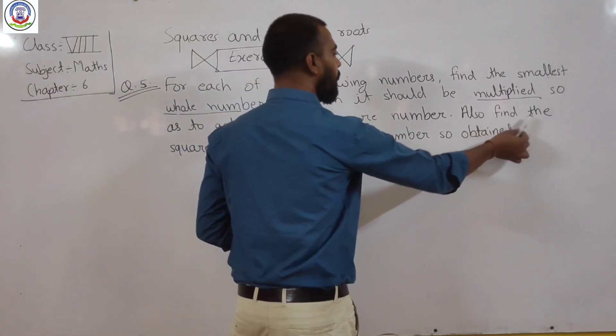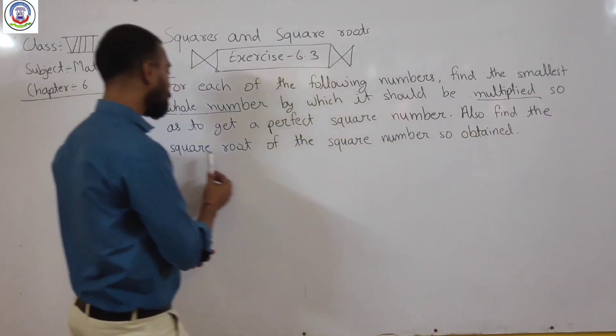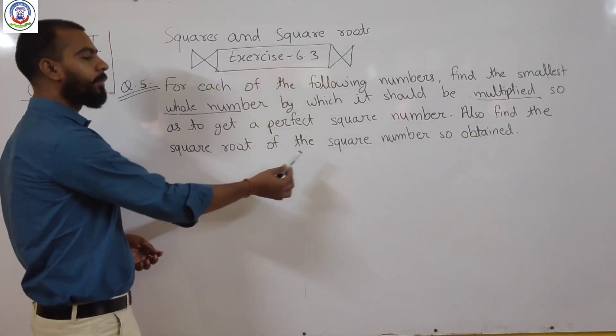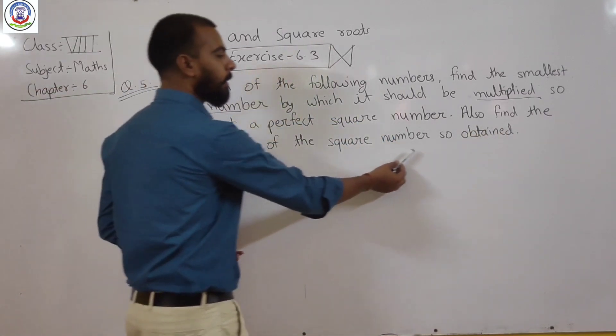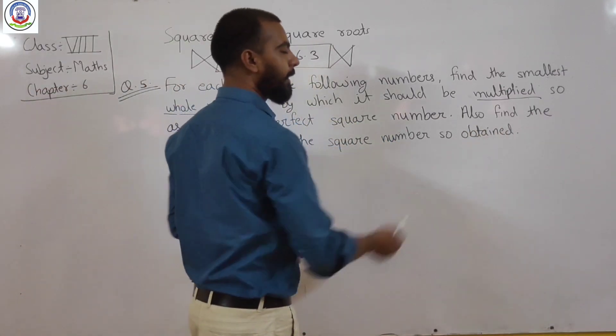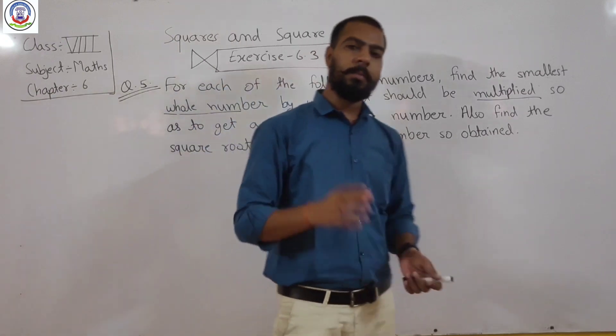And then also find the square root of the perfect square number so obtained.